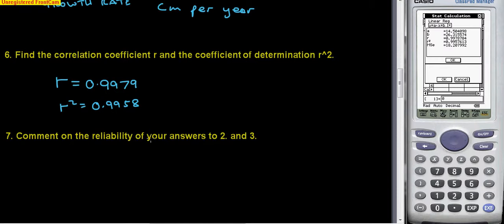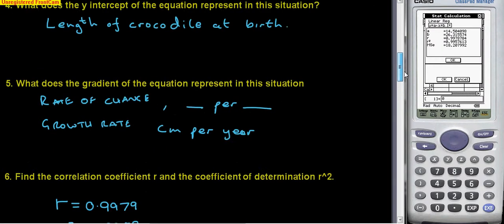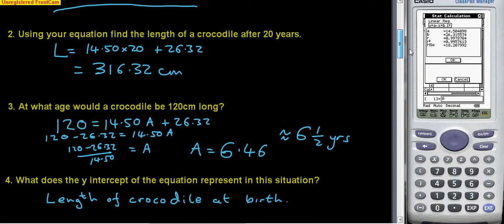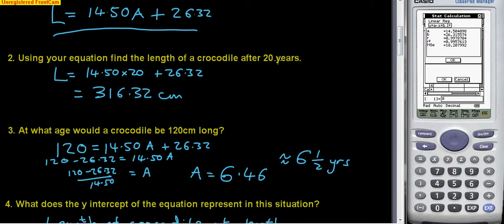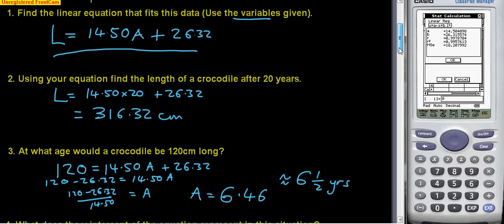Let's look at question two to start with. I'll just go back and refresh my memory. What was happening in part two? In part two we were using the equation to find the length of the crocodile after twenty years, and it was three hundred and sixteen centimeters.